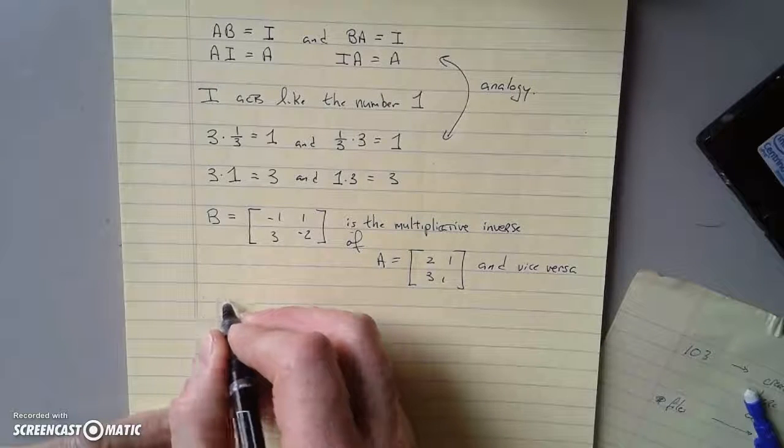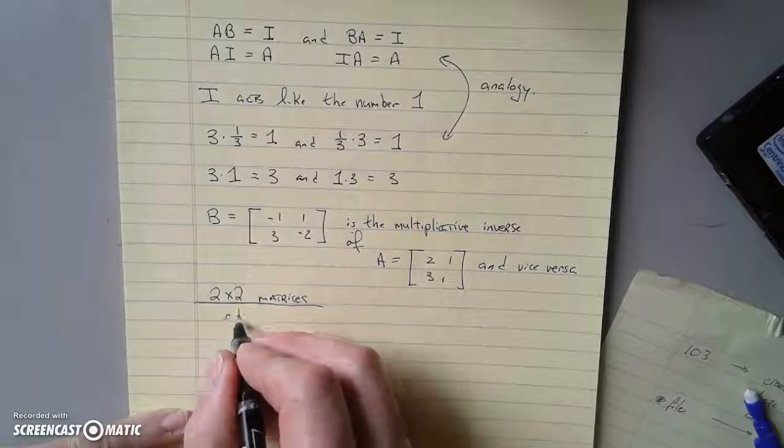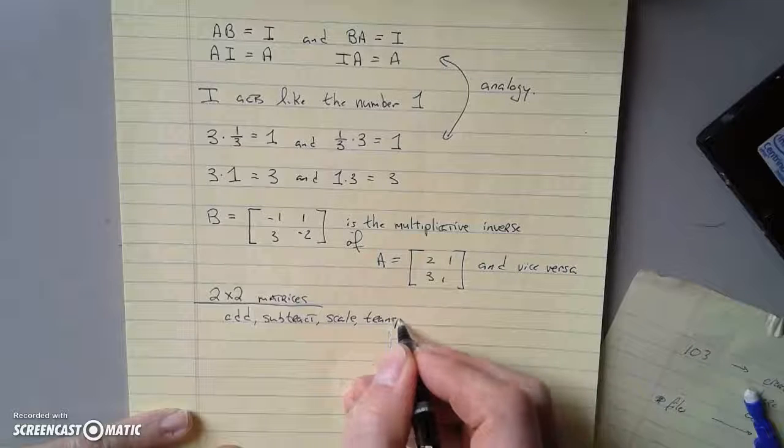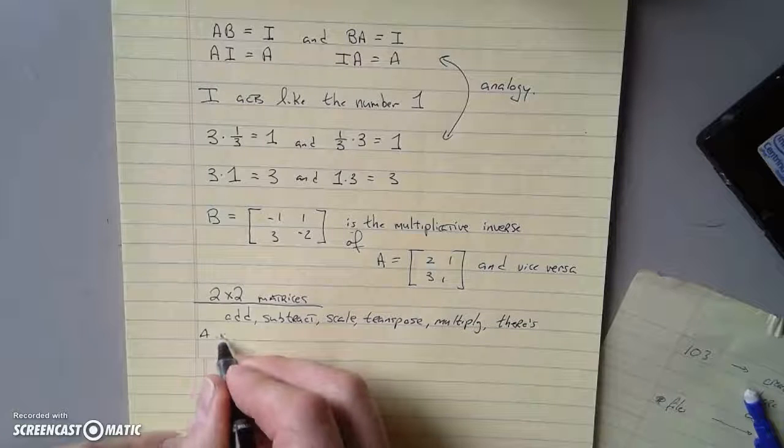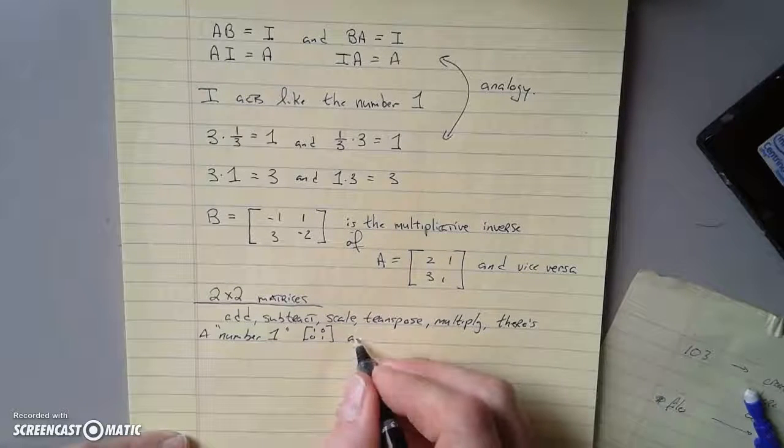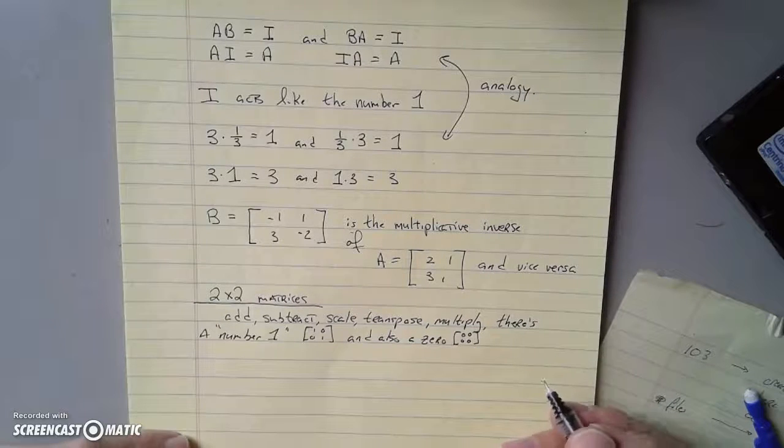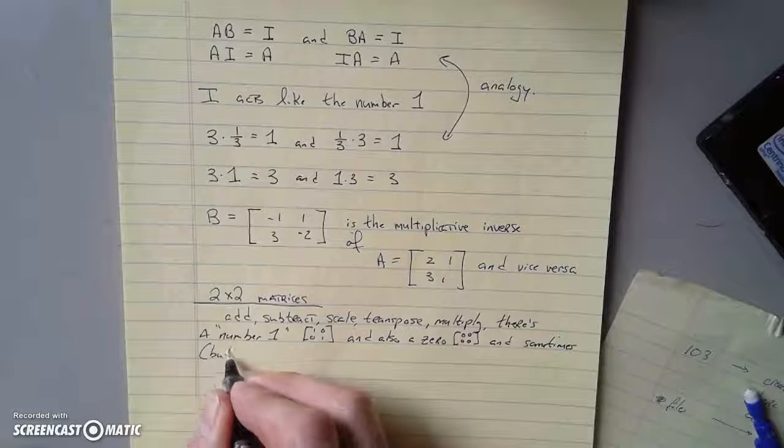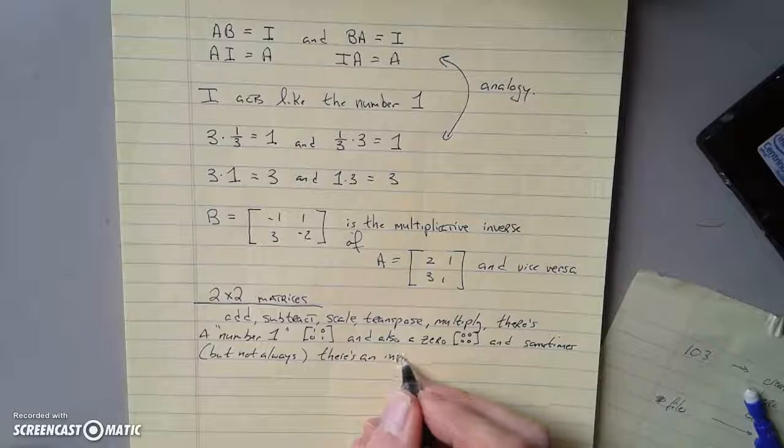So let's kind of summarize this. So the example, looking at 2 by 2 matrices, you can add, you can subtract, you can scale, you can transpose, you can multiply. There's a number 1, that's the 1, 0, 0, 1. And also, I didn't mention before, there's a 0. It's kind of boring. It's the matrix of all 0s. And sometimes, but not always, there's an inverse.